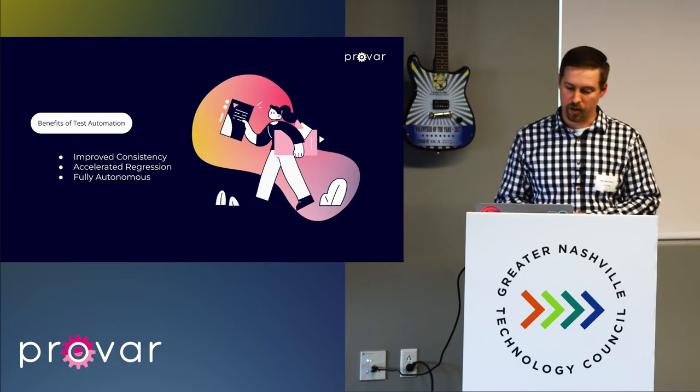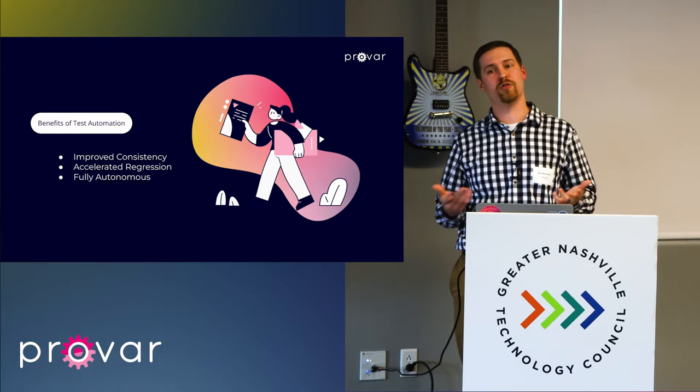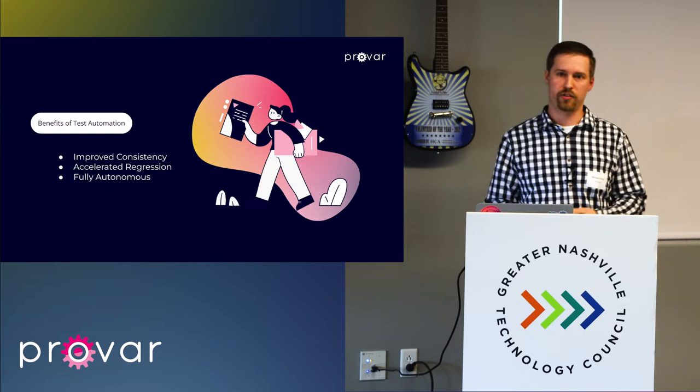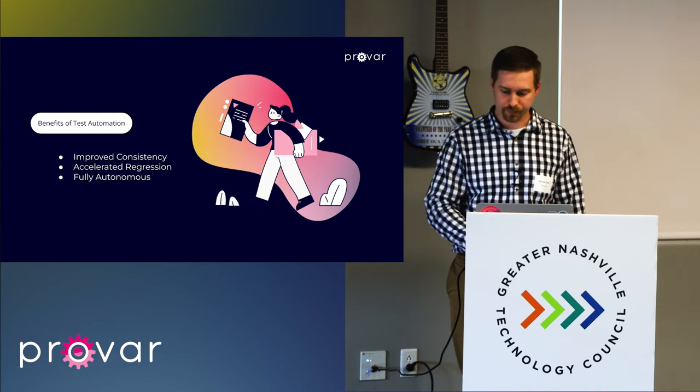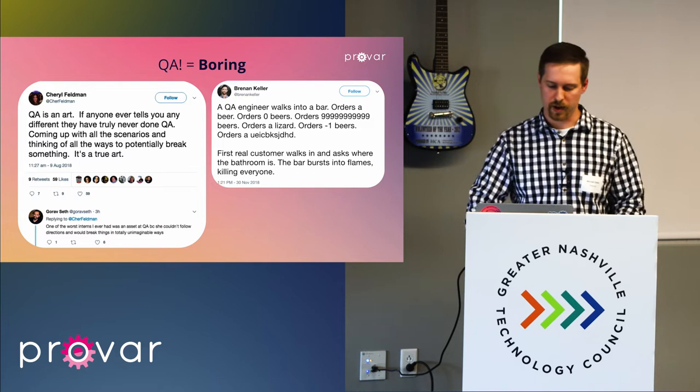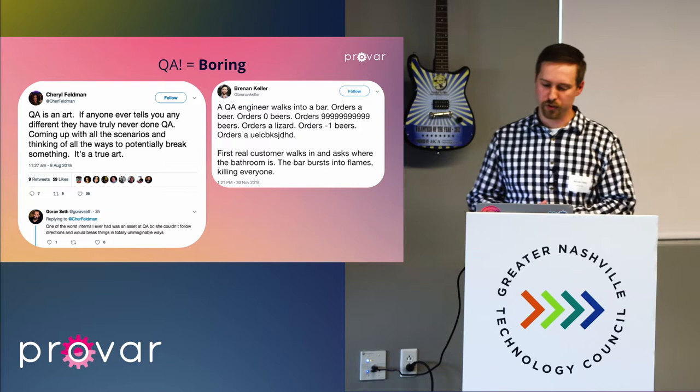The last point on this slide is full autonomy. What I mean by that is there's no human intervention. When something is automated, you don't have to babysit it and make sure everything is working correctly. It's fire and forget — you just press a button and off it goes, or you could even schedule it.